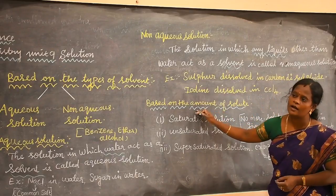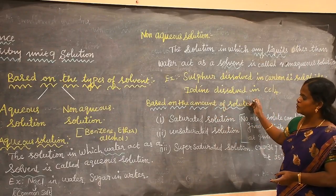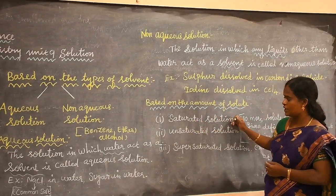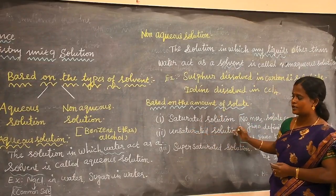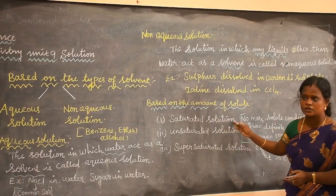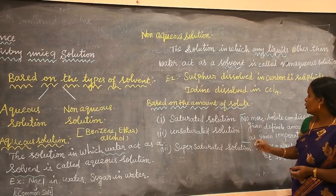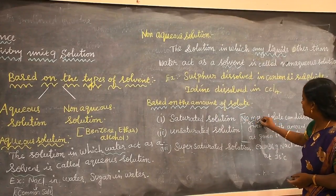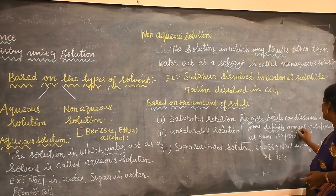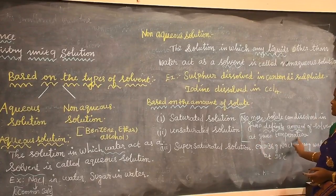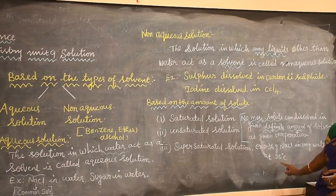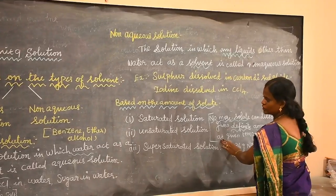Next, based on the amount of solute, we can classify into three types: saturated solution, unsaturated solution, and supersaturated solution. A saturated solution is one where no more solute can dissolve in a definite amount of solvent at a given temperature. For example, 36 grams of sodium chloride in 100 grams of water at 25 degrees centigrade forms a saturated solution.